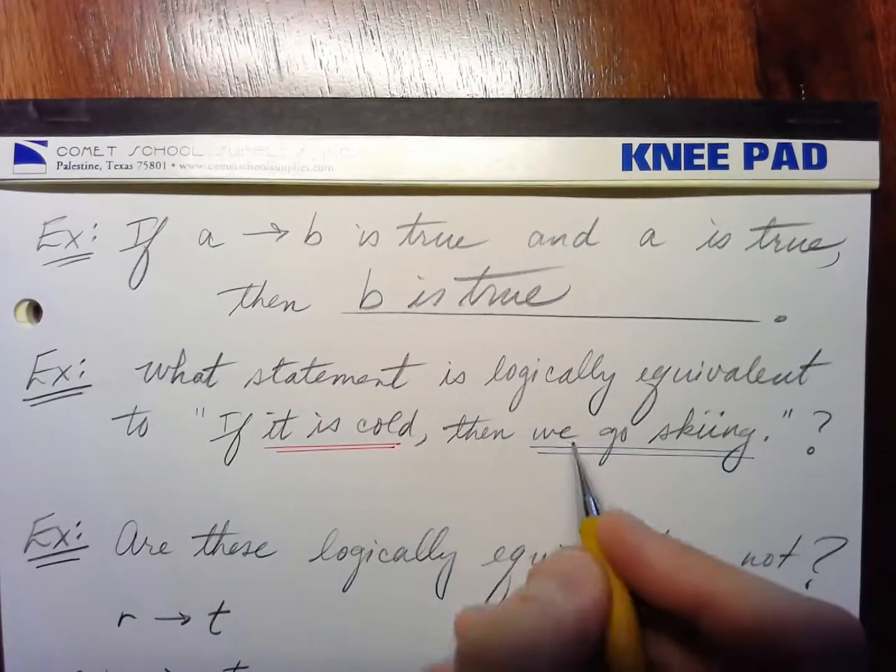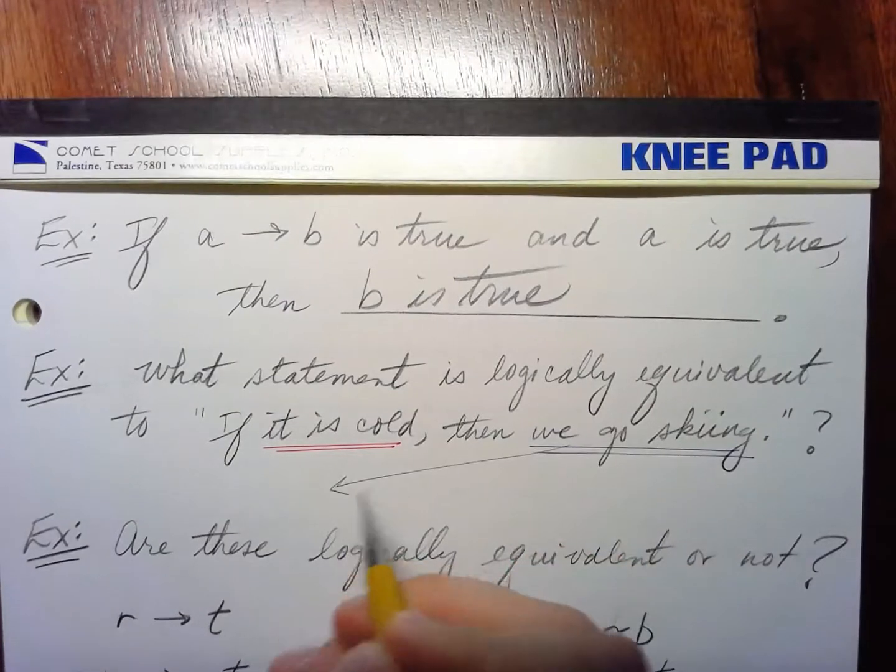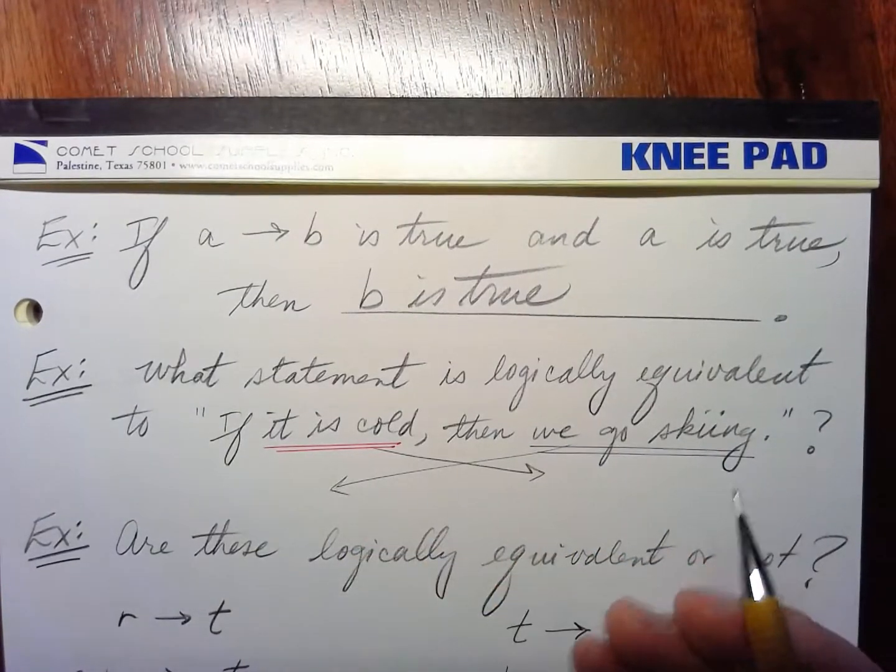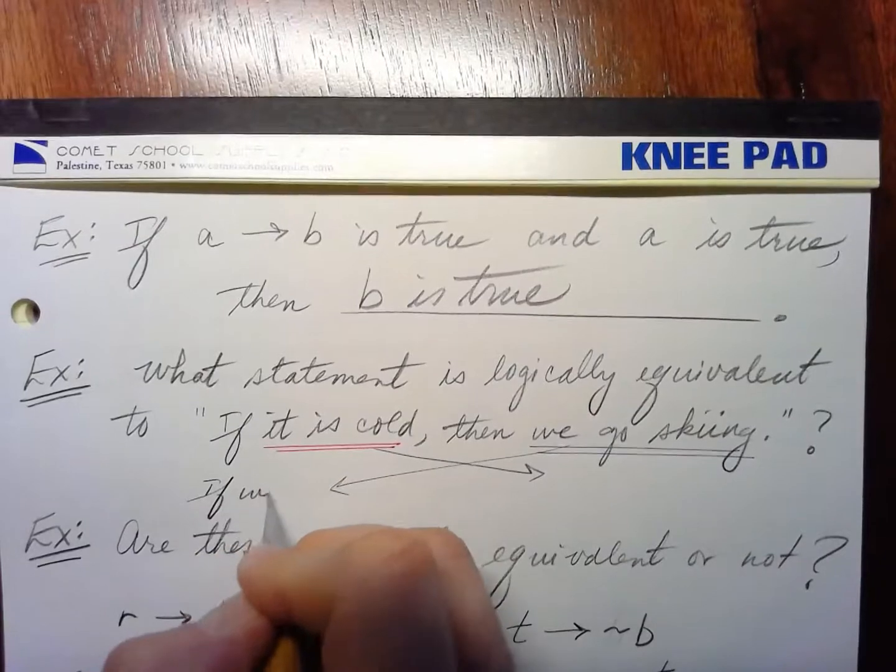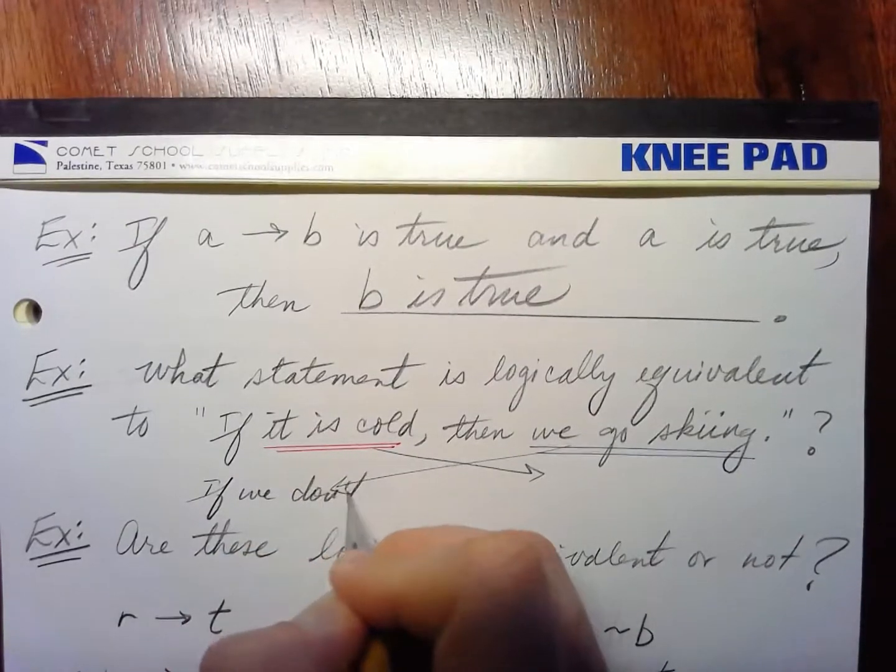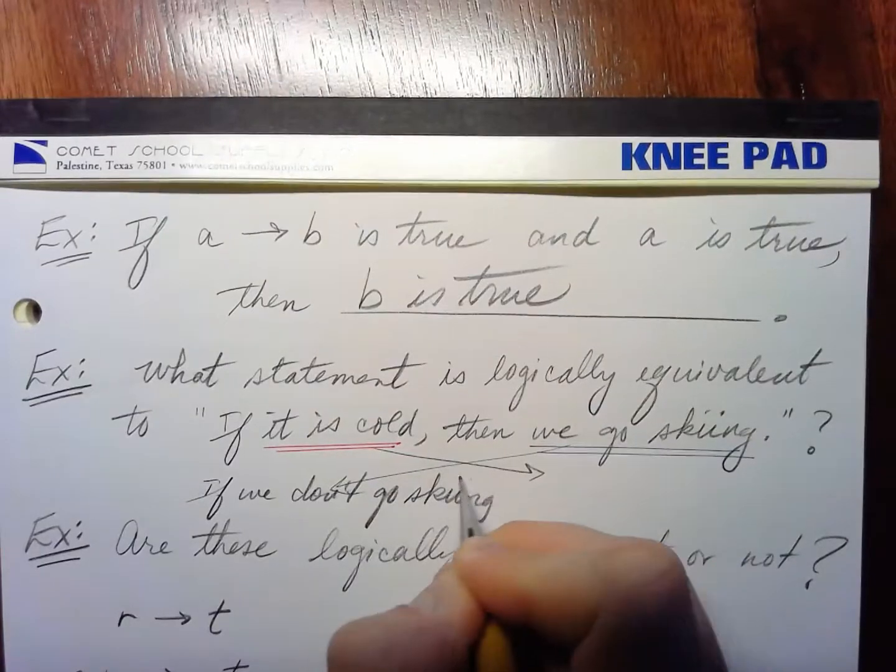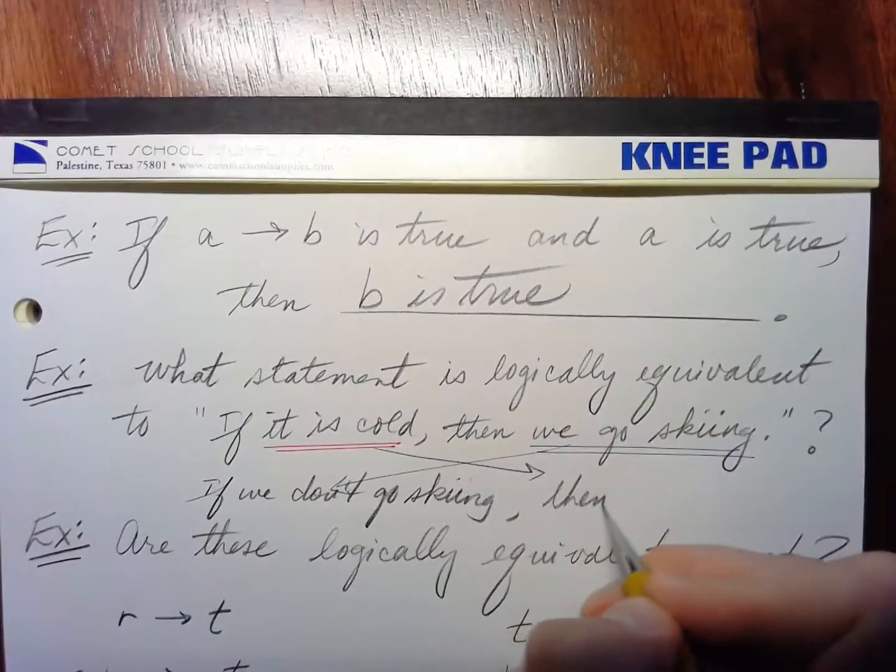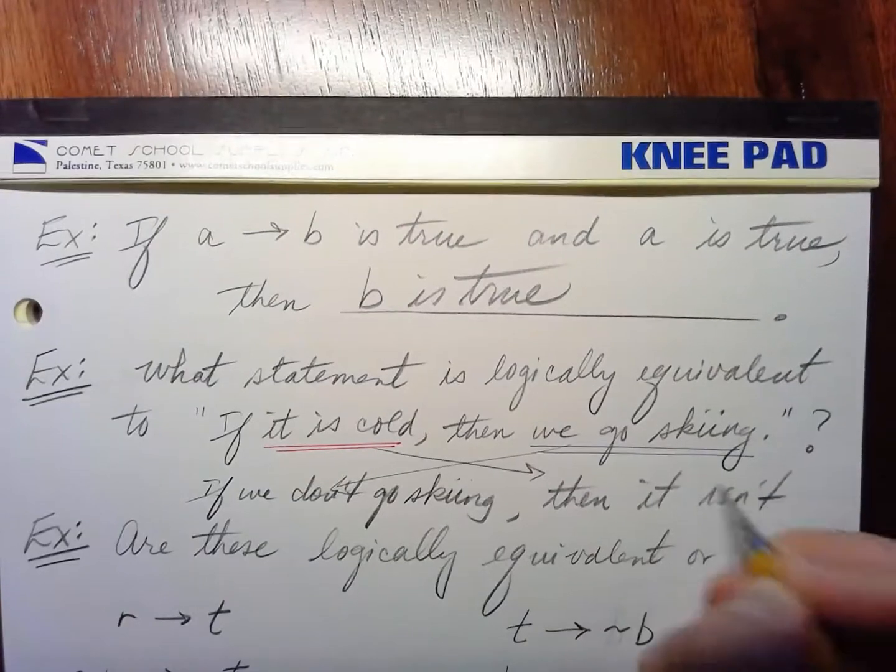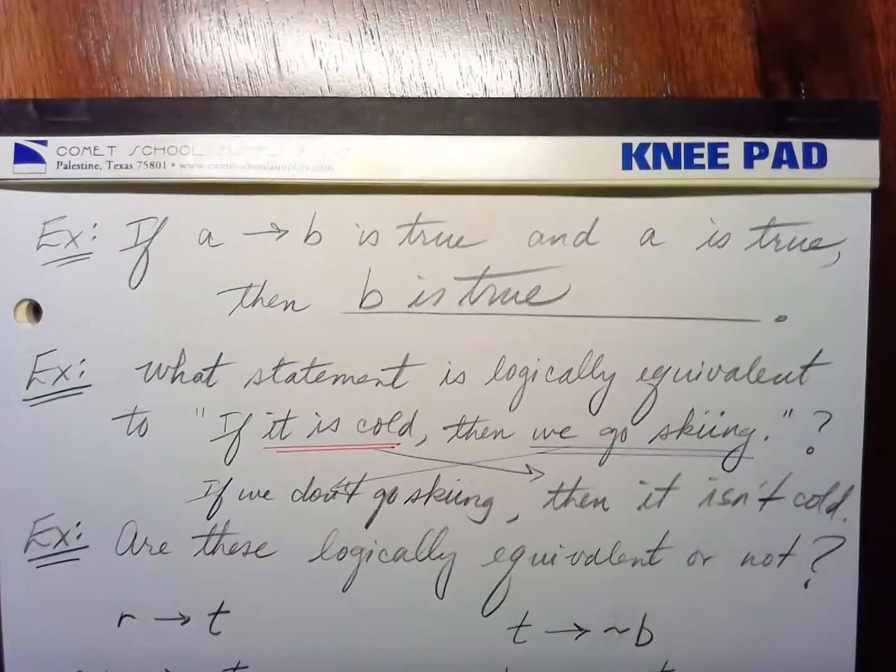And so we need to flip them. So this needs to come up here, and this needs to go over here, and we need to negate both of them. So if we don't go skiing, then it isn't cold.